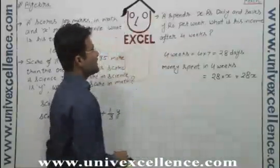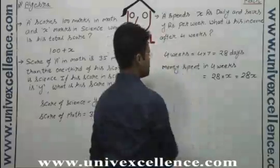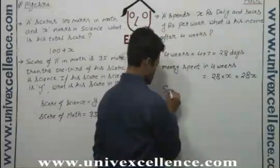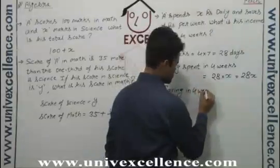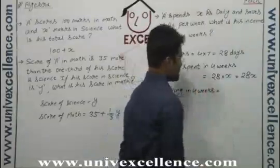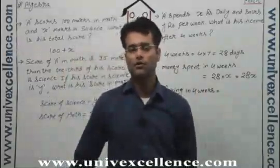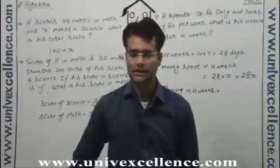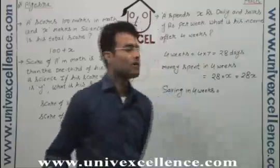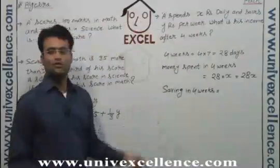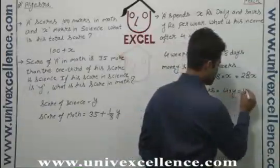Now every week the person is saving y rupees, so saving in four weeks: if you save two rupees a week, you will save two into four, that is eight. So here instead of two, y is given, so saving in four weeks will be four into y, or four y.